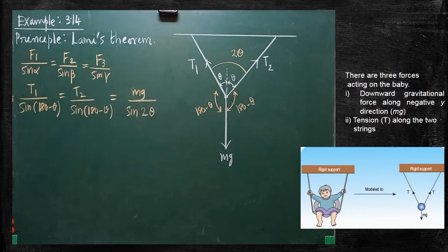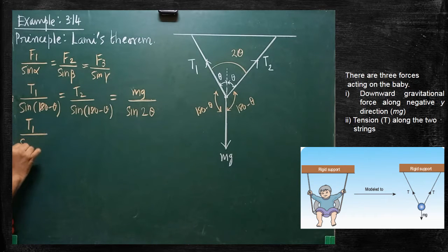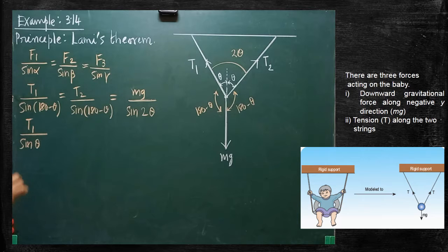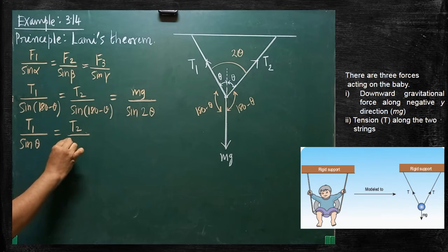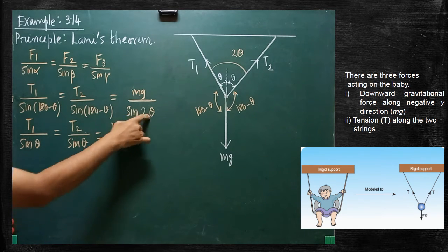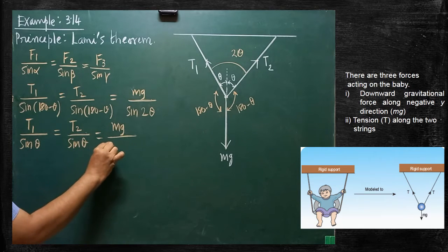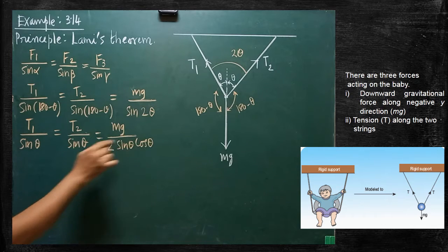What is asked in the problem? We are asked to find out the tension acting on the string. We have to simplify this equation. T1 divided by sin(180 minus theta) — and sin(180 minus theta) equals sin theta, as per trigonometrical formulas. So we can write sin theta directly. Similarly, T2 divided by sin(180 minus theta) also becomes T2 divided by sin theta. And Mg divided by sin 2 theta — using the formula sin 2 theta equals 2 sin theta cos theta.